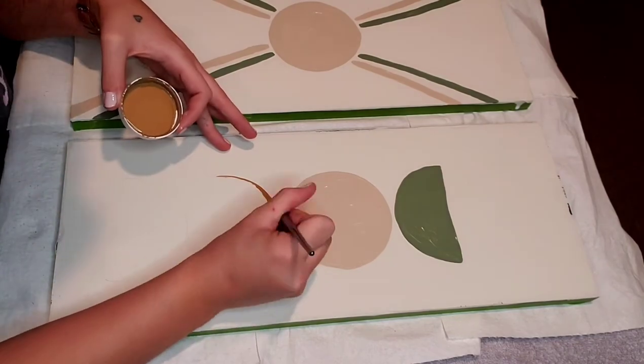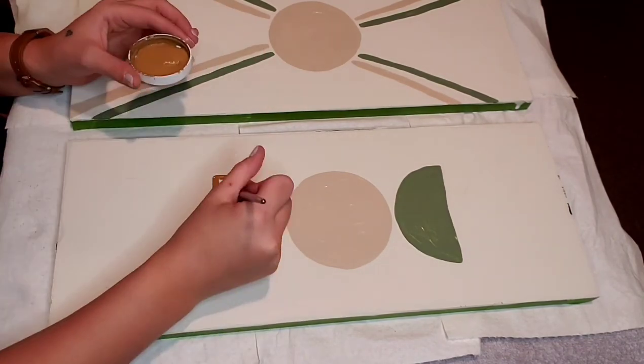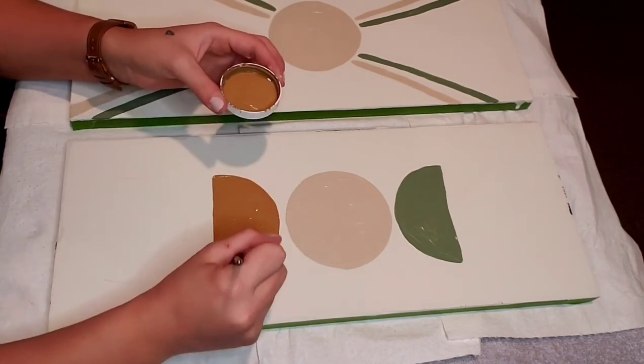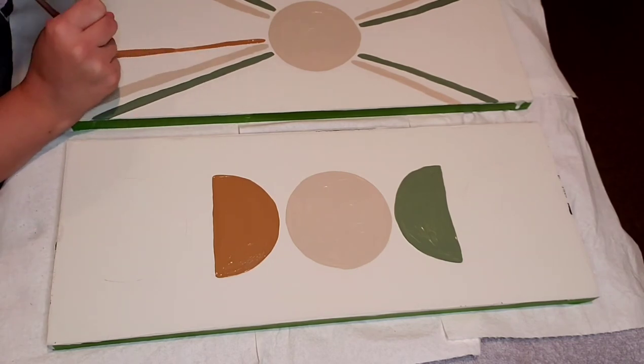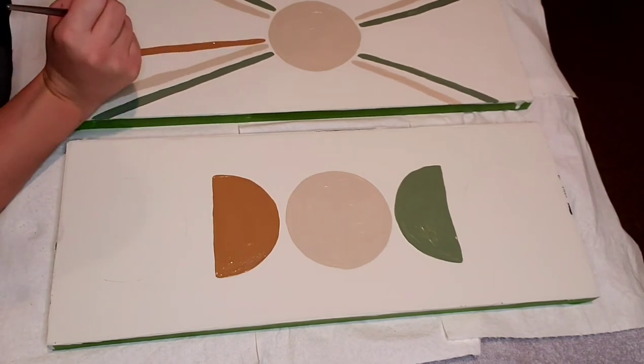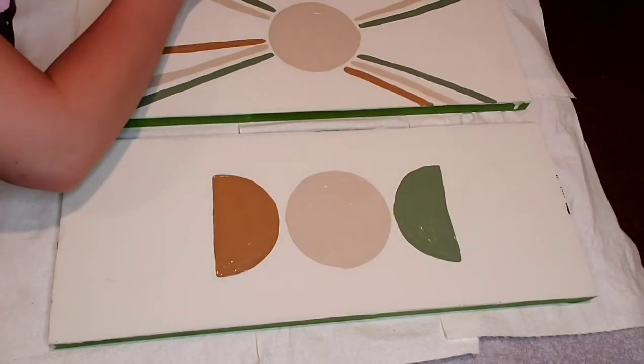Now I'm going in with our third color, which is this really pretty caramel, is what I like to call it. If I know it's called something else, I will link all these colors down below for you or list them out. And I just filled in that half circle as well and then did four more lines on the sun.